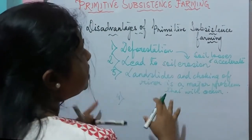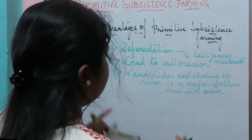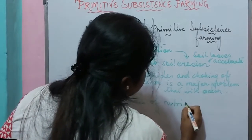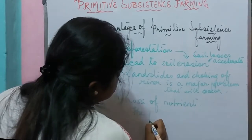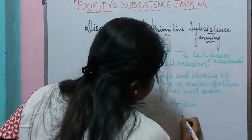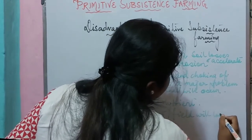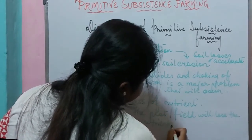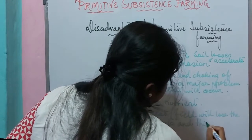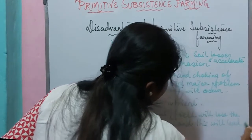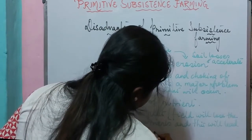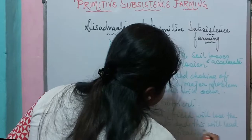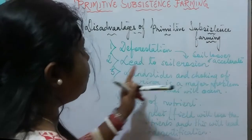Due to primitive subsistence farming and deforestation, the field also experiences loss of nutrients — the soil loses its nutrients — which often leads to desertification, a common problem associated with primitive subsistence farming.